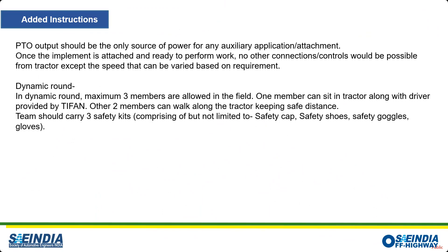Last year we allowed five to six members on the field during the field trial, but this year we are limiting it to three. All other team members can be present outside the field boundary. Two members can stand on either side of the implement and one will sit with the operator to communicate commands about braking, stopping, or adjusting speed. Those three members must have proper safety kit: safety shoes, safety goggles, safety cap, and gloves.